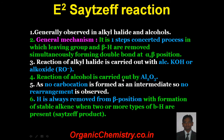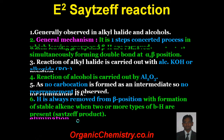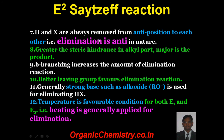Reaction of alcohol is carried out with Al₂O₃. As no carbocation is formed as an intermediate, no rearrangement is observed. Hydrogen is always removed from the beta position with formation of the stable alkene when two or more types of beta hydrogens are present. H and X are always removed from the anti-position to each other — that is, elimination is anti-periplanar. Greater steric hindrance in the alkyl part, lesser is the Zaitsev product. Beta branching increases the amount of elimination reaction.